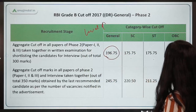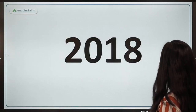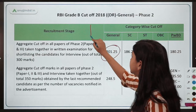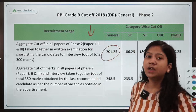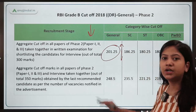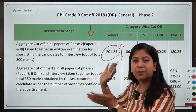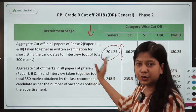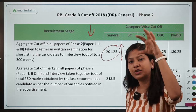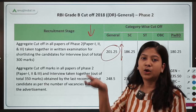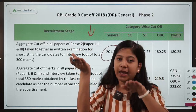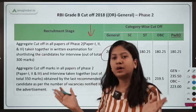In 2018, the level of examination was easy to moderate, yet the cutoff went even higher. This lets us draw a clear relationship: if the level of examination is low, the cutoff tends to go up, and if the level is high, the cutoff may go down.